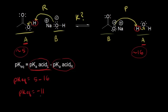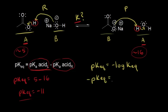So how do we go from the pKeq to the Keq? We know from general chemistry that pKa equals the negative log of Keq. To solve for Keq, we put the negative sign on the left: negative pKa equals the log of Keq. To get rid of the log, we take 10 to both sides. So Keq equals 10 to the negative pKa.